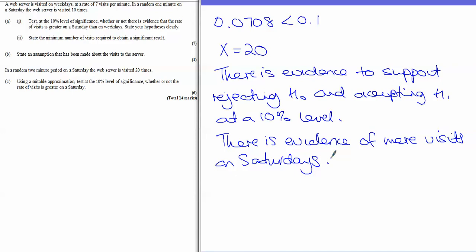In summary, the first part was a straightforward Poisson question. Adding the normal approximation made it harder, but the most common mistake is forgetting the continuity correction. As soon as you move from Poisson to the normal distribution, you must think: continuity correction.